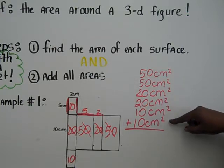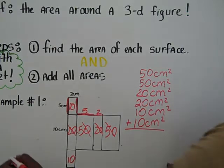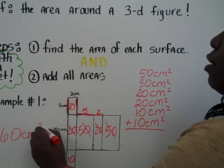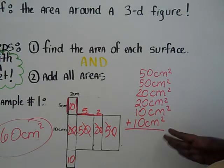1, 2, 3, 4, 5, 6, we would get a total of 160 centimeters squared for our surface area, according to the net.